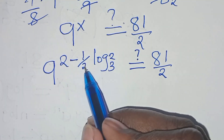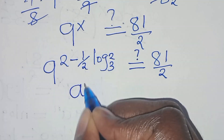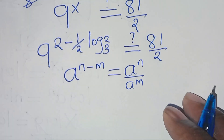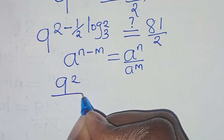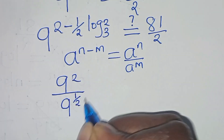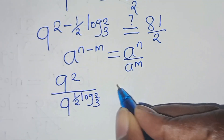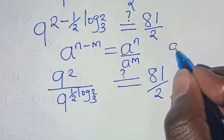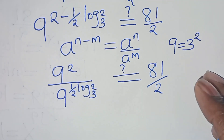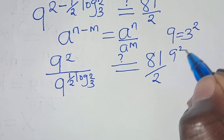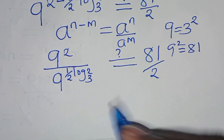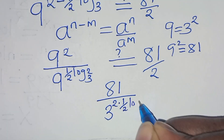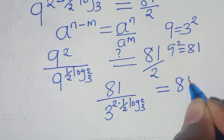Now 9 to the power of (2 minus one-half log base 3 of 2) is in the form of a to the power of n minus m, which we can transform to a^n over a^m. So this implies 9 to the power of 2 divided by 9 to the power of (one-half log base 3 of 2) should give us 81 over 2. We can express 9 as 3 to the power of 2, and note that 9 squared equals 81. So we have 81 divided by 3 to the power of (2 times one-half log base 3 of 2), equal to 81 over 2.